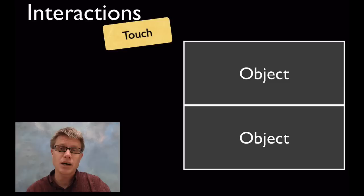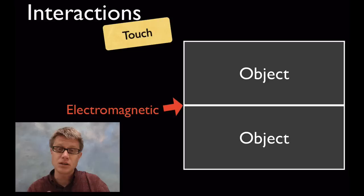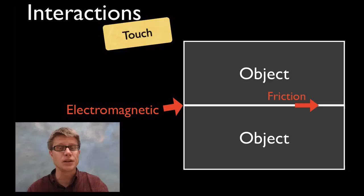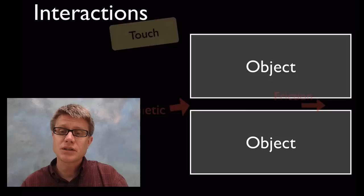We can have interactions between two objects when they are touching. When one object touches another, those interactions are electromagnetic in nature — dealing with the electrons around the atoms. If you push one object over another or rub your hands together, there's another force at play: friction. It's also electromagnetic, and we won't have frictional forces until those objects are touching each other.